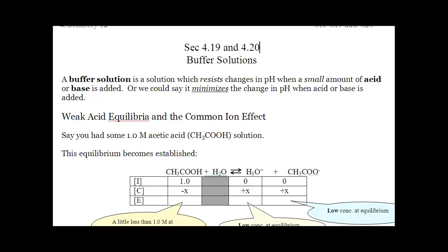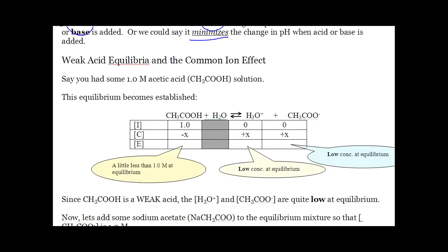Ladies and gentlemen, the last couple of sections, 419 and 420, are on buffer solutions. A buffer either resists a change in pH or minimizes the change in pH when an acid or base is added. What a buffer is designed to do is keep the pH of whatever system it's in at a certain pH, and it will stop it from shooting straight down or straight up if an acid or base is added. The buffer we're going to use in our notes is based off of the weak acid acetic acid.